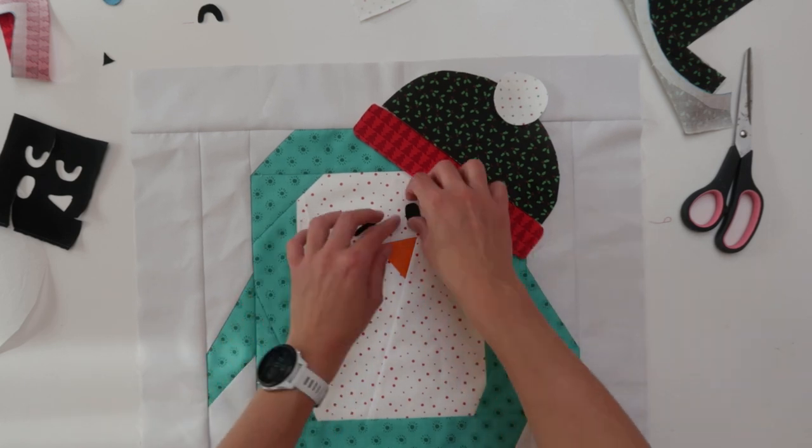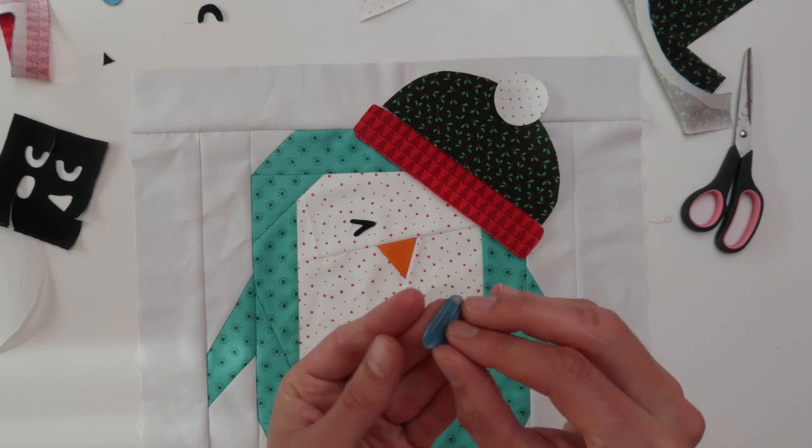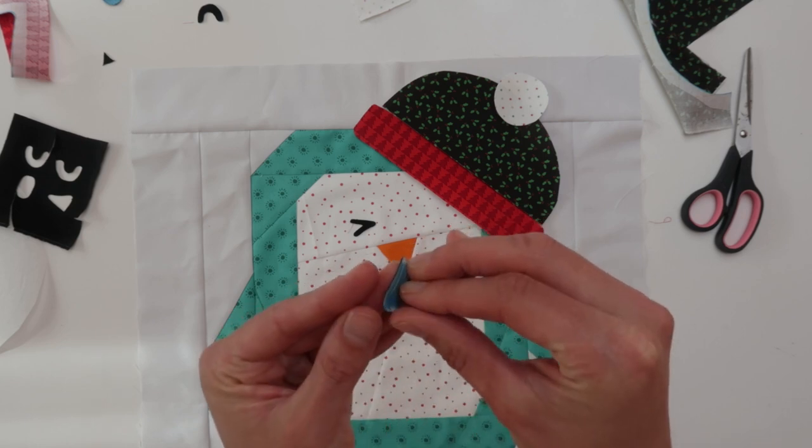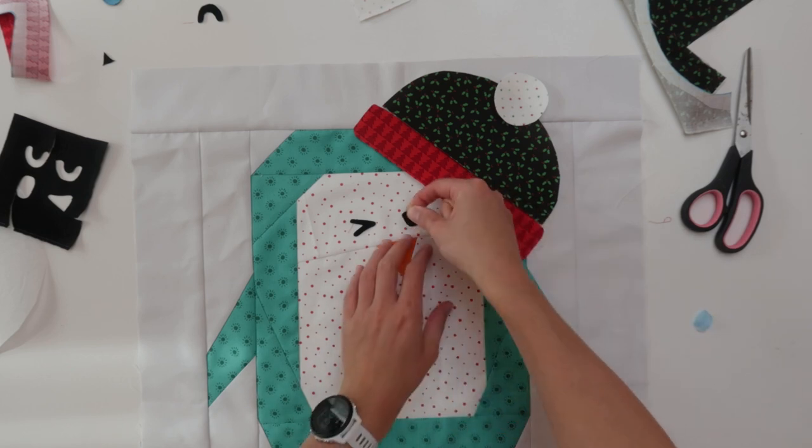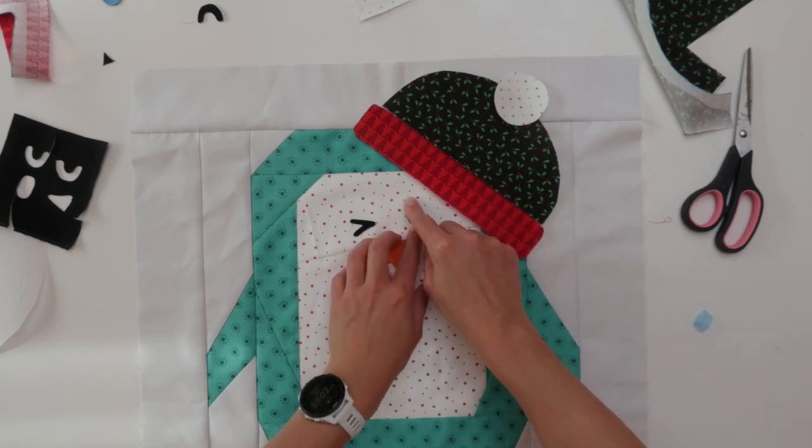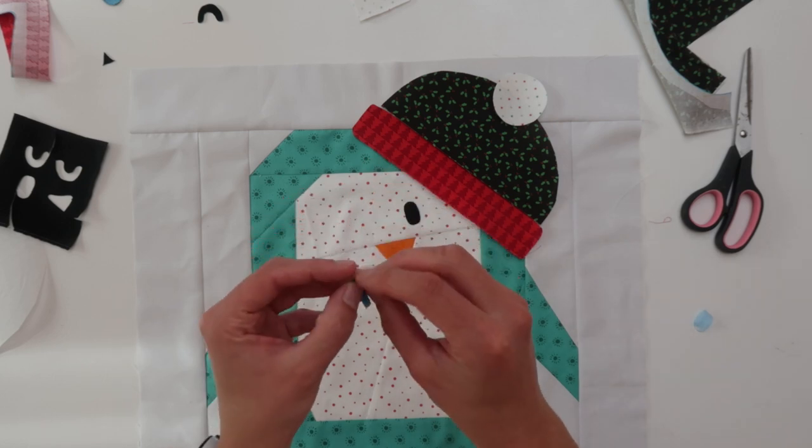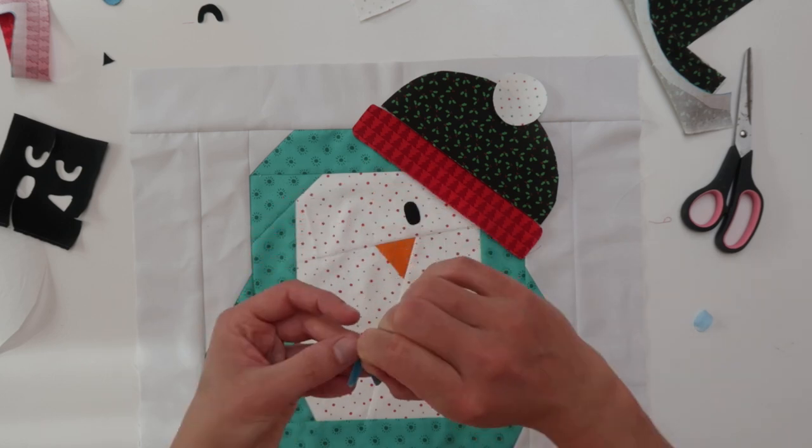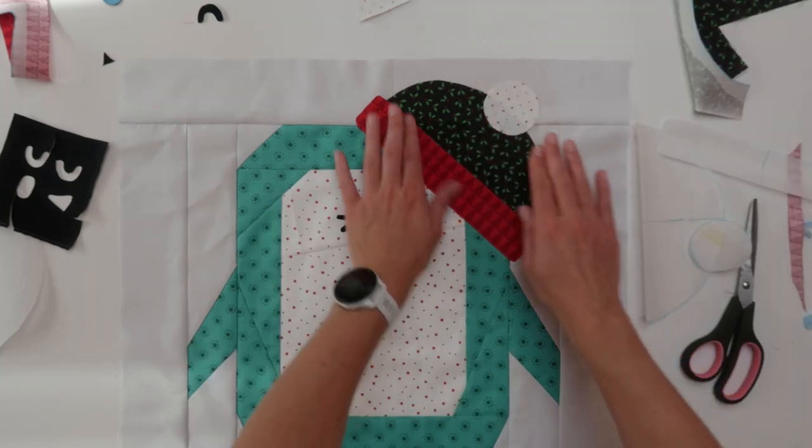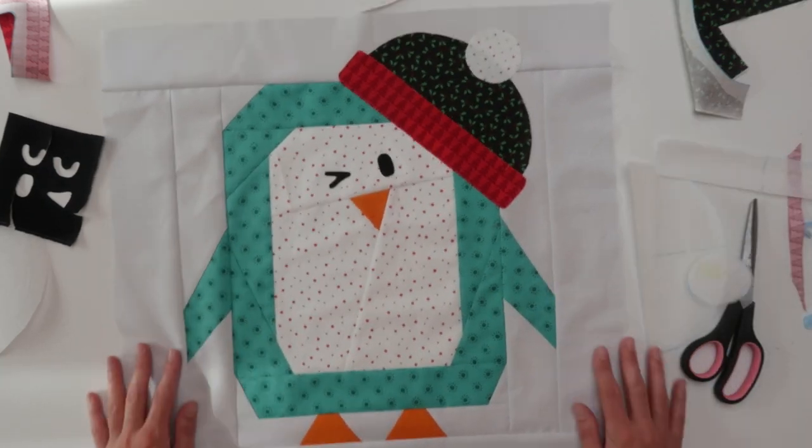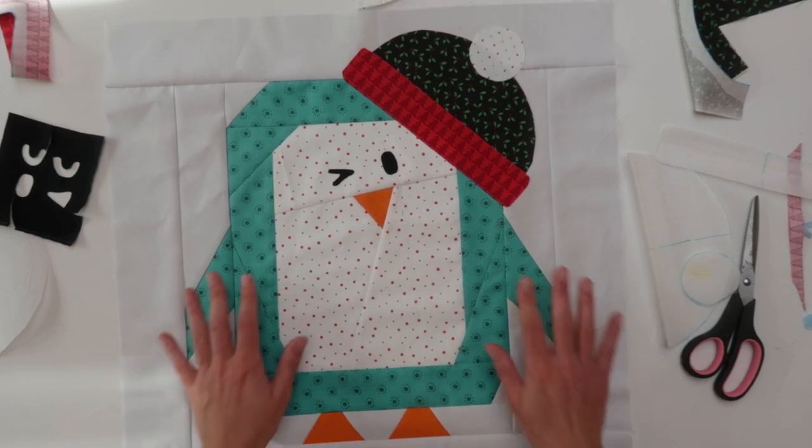And once you're happy with your setup, you can peel away the steam a seam on the back and put it in place. Perfect. Everything is in place and ready to be quilted.